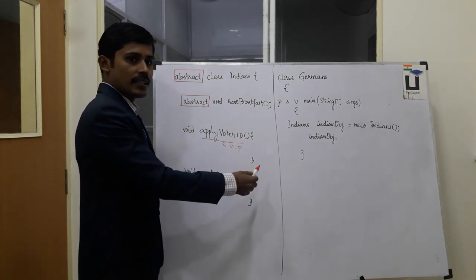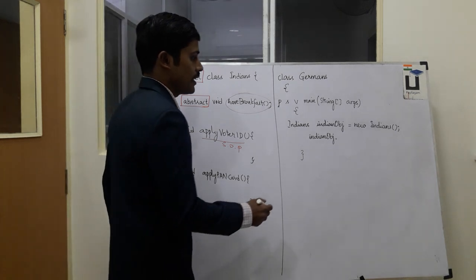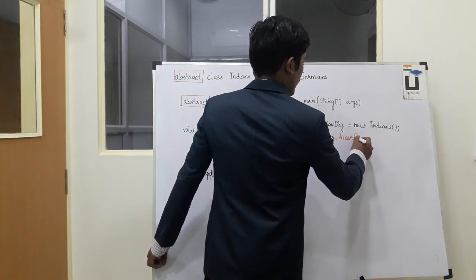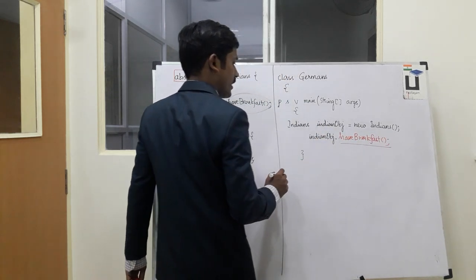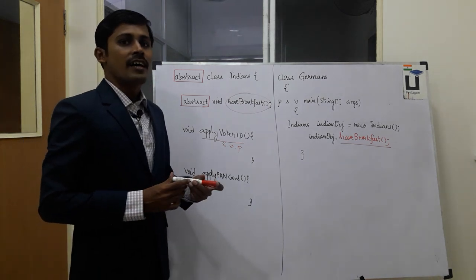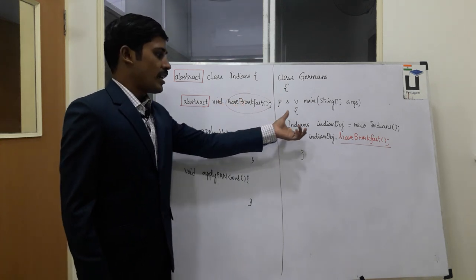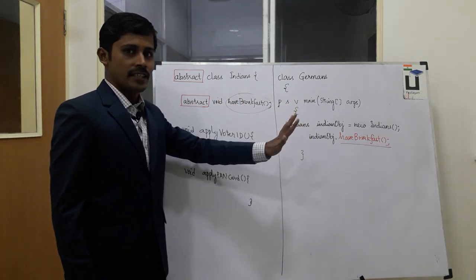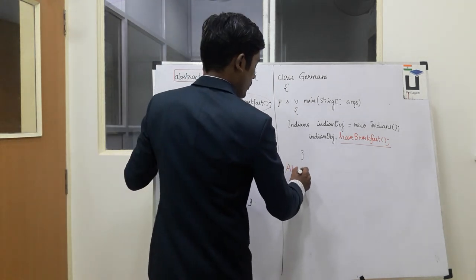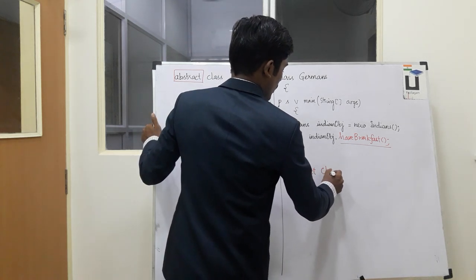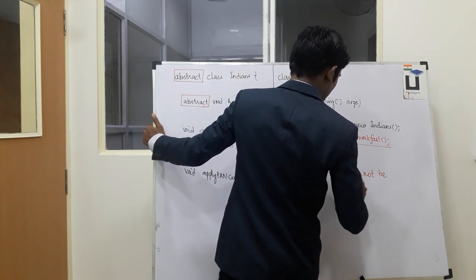If you use a print statement, you can use the applyPanCard. Now let's look at the 'have breakfast' method. You can use the object to create. That's why, in the Indian class, the non-private method 'have breakfast' is there. Because of the abstract method, the abstract class can be created. As stated in the book: abstract classes cannot be instantiated.